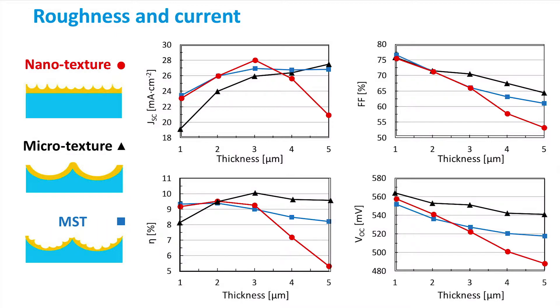But why exactly do these surfaces with nanotexture have such a detrimental effect on the electrical performance of the solar cell?